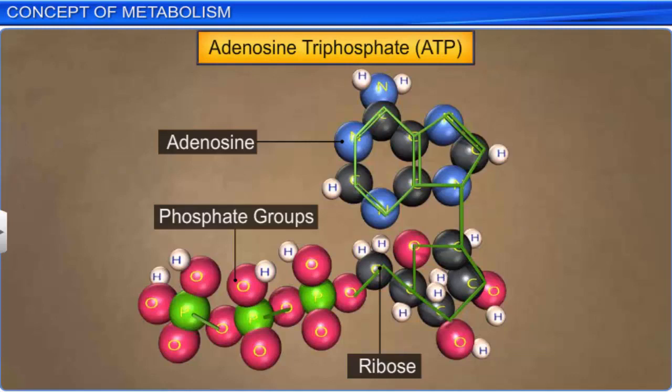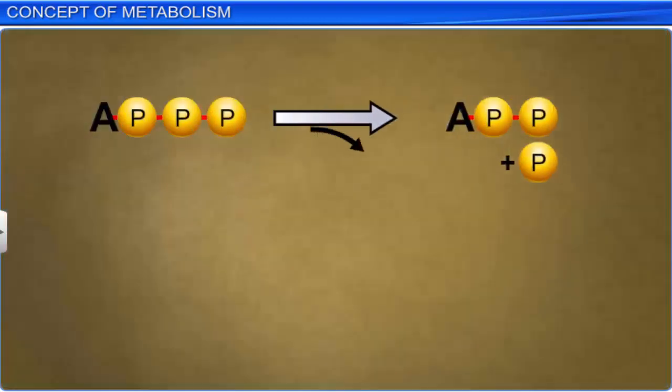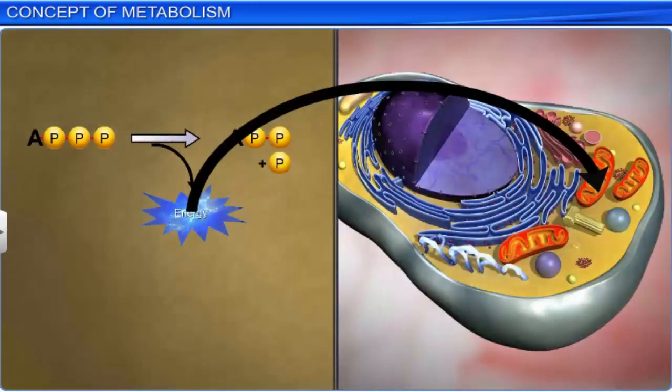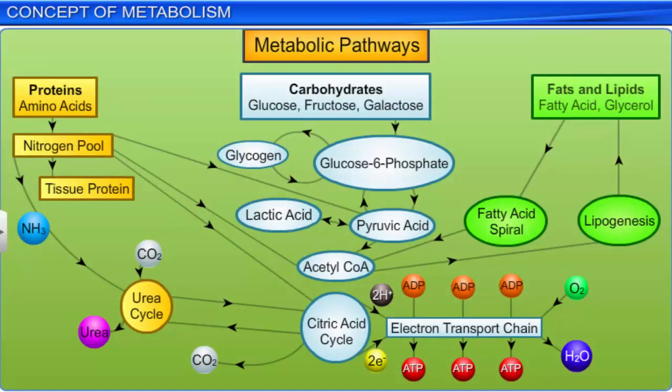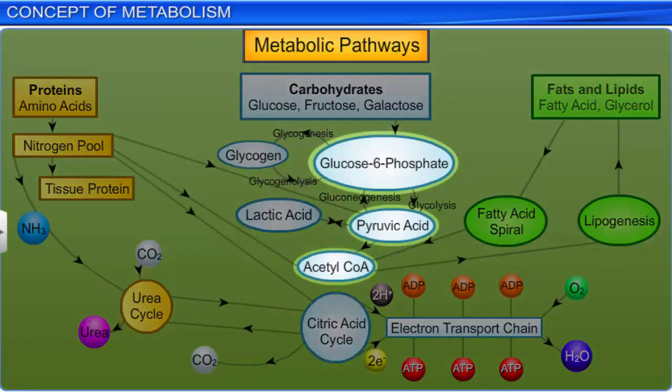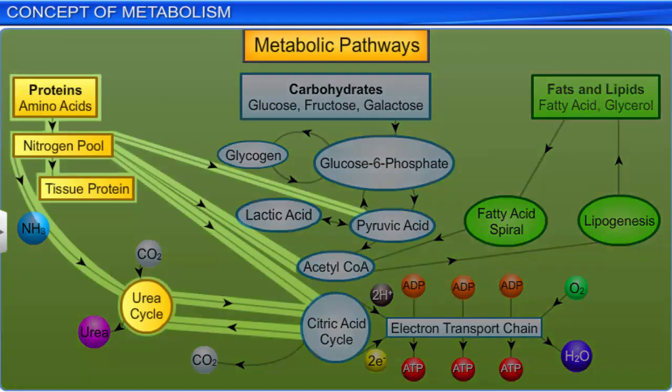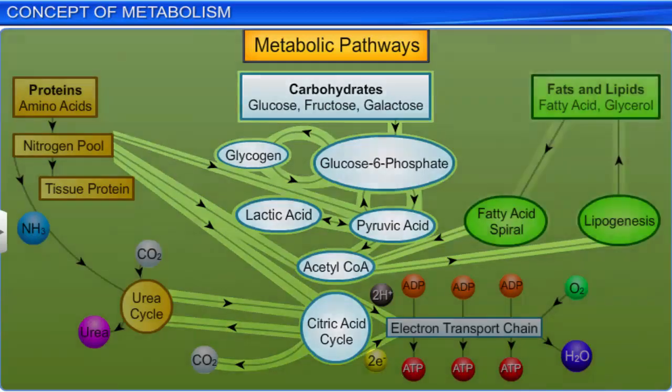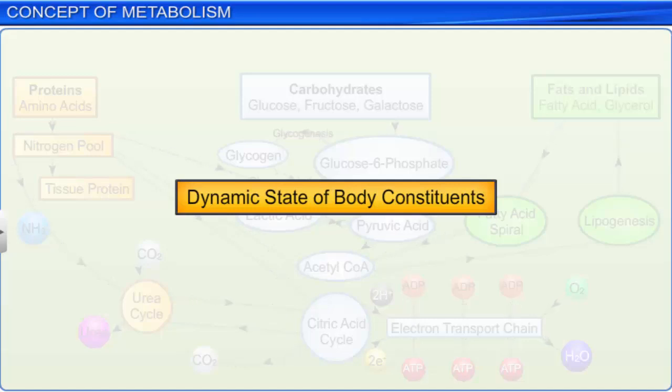When bonds of ATP break, a lot of energy is released. ATP also transports chemical energy within cells for metabolism. All the chemical reactions associated with metabolic pathways are catalyzed reactions. Metabolic pathways can be compared to automobile traffic, where they have traffic junctions when they meet and cross each other. Just like automobile traffic, the flow of metabolites through these pathways is definite, and takes place in a specific direction. This flow of metabolites is also called the dynamic state of body constituents.